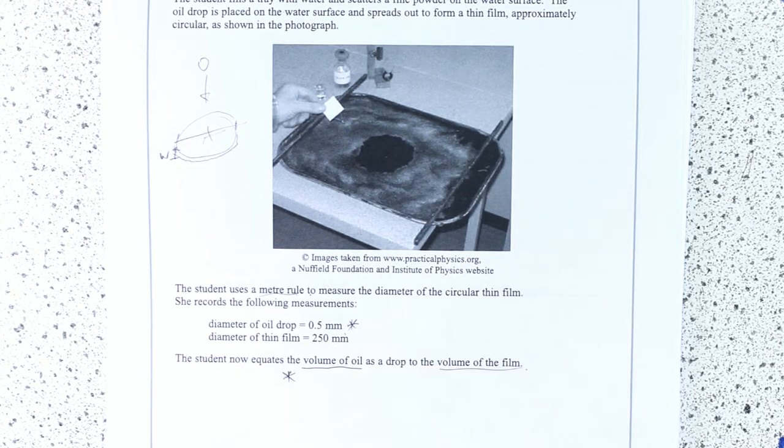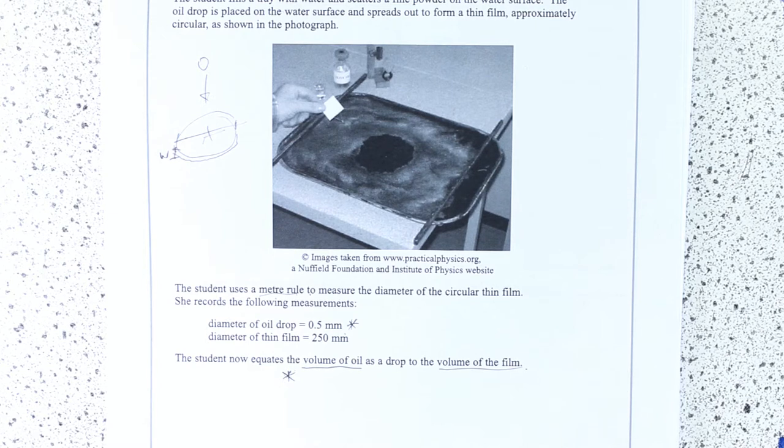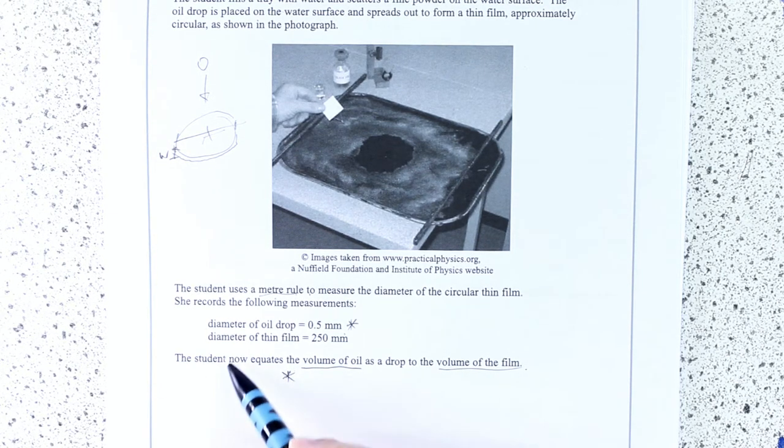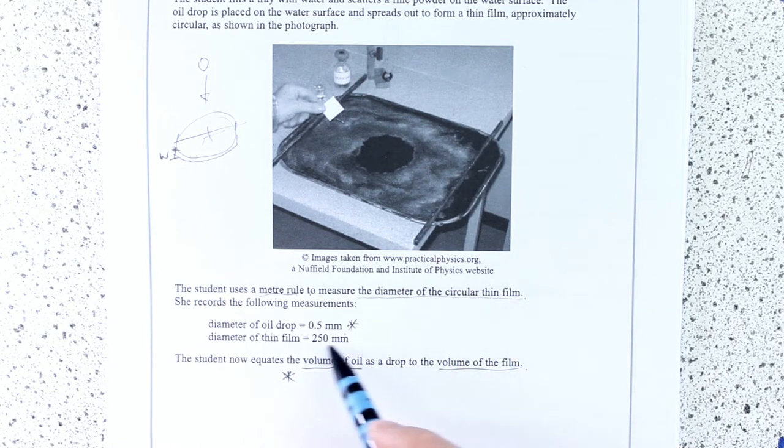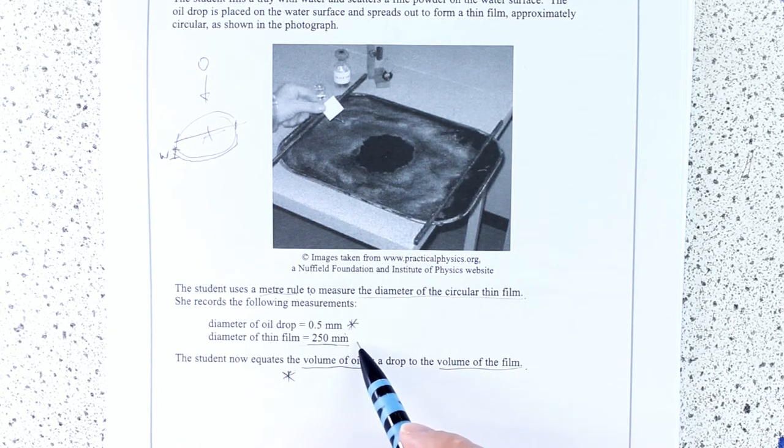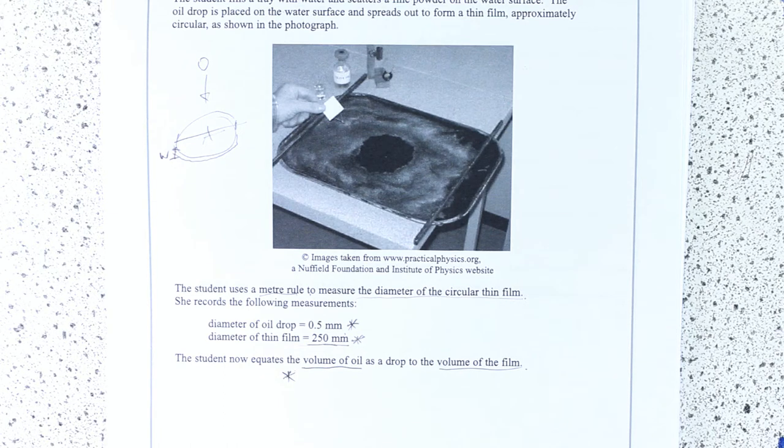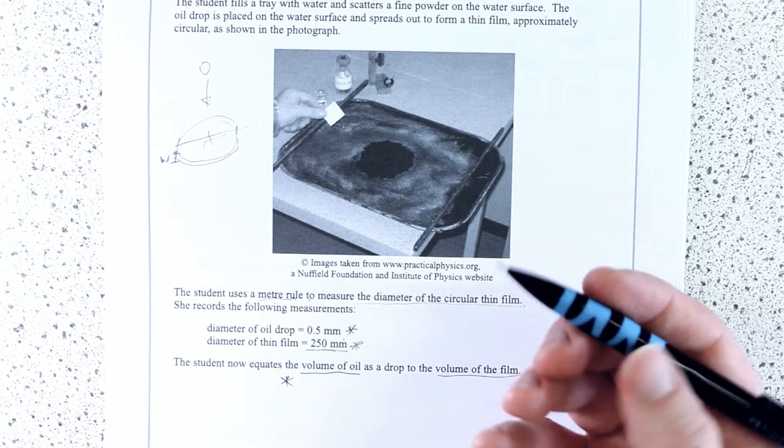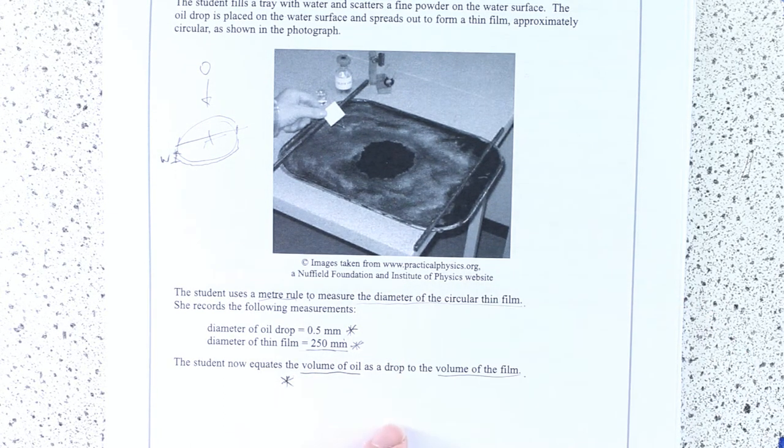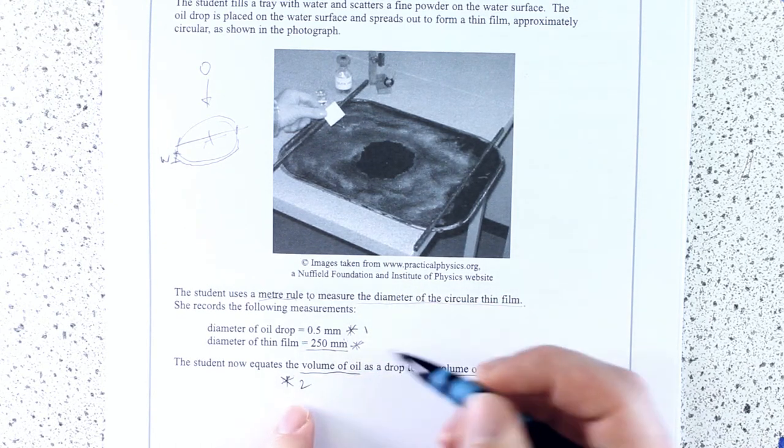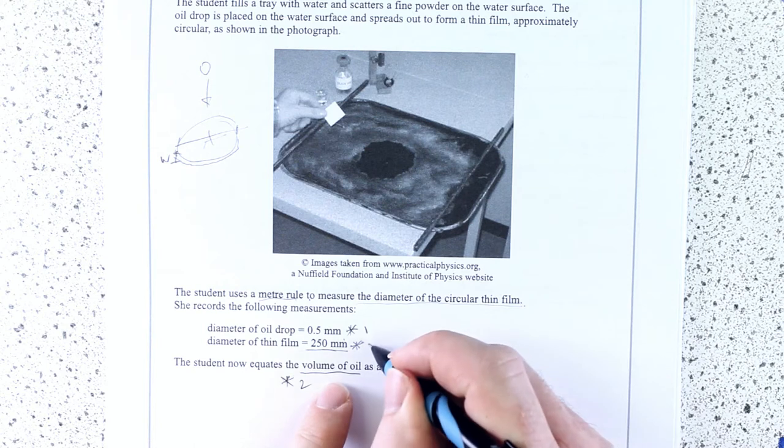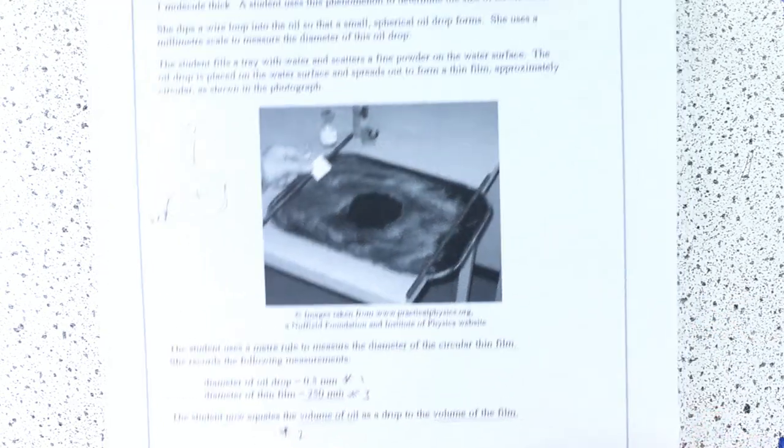So, if we've got an error there, we're probably going to have an error in this one as well. And then lastly, how are they going to do that? Measure the diameter of the circular film, thin film. This is their reading they've got there. This could be an issue as well. So, I'm a little planning, even though it's not a written communication one. I'm going to talk about the diameter of the oil drop, then talk about how we're working out the volume of the oil drop, and then talk about the diameter of the thin film.